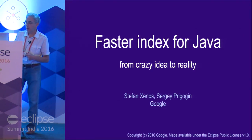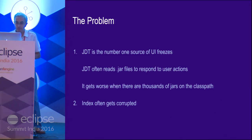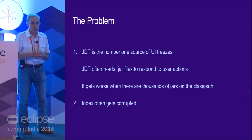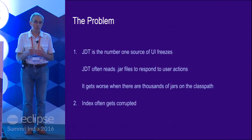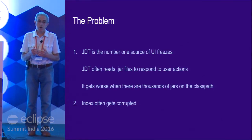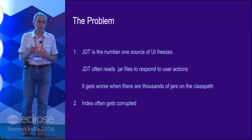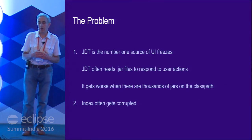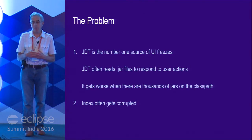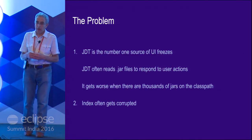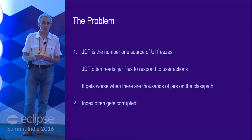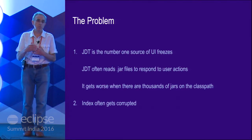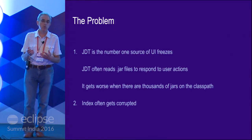So what is this thing for? There is a problem. At my job, our team is responsible for providing support to Google engineers who use Eclipse — making sure that they can use Eclipse successfully and be productive with it in their daily job. And the number one complaint we hear from our customers, or Google engineers, is that Eclipse is slow. Not only is it slow, it sometimes completely freezes the UI and you don't even have an idea what's going on.